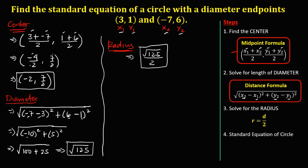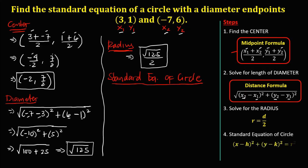Now for the standard equation of the circle. The formula is: (x − h)² + (y − k)² = r². The center of the circle gives us h and k, so from the center coordinate (-2, 7/2), h is negative 2 and k is 7 over 2.